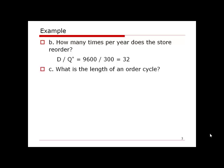Part C asks us to calculate the length of an order cycle — the interval between two consecutive orders. This is determined by the total operating time and the number of orders. For example, if we operate 10 days and place 2 orders, the order cycle is 10 divided by 2, which is 5 days.